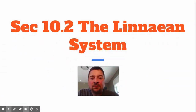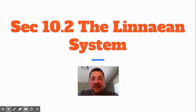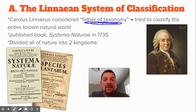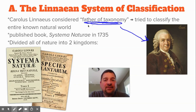Hey, Hammy here, back with part two, on which we are discussing the Linnaean system of classification and all the different parts of that. Carolus Linnaeus is considered the father of modern taxonomy. He was actually pretty ambitious — he tried to classify all of the known natural world.